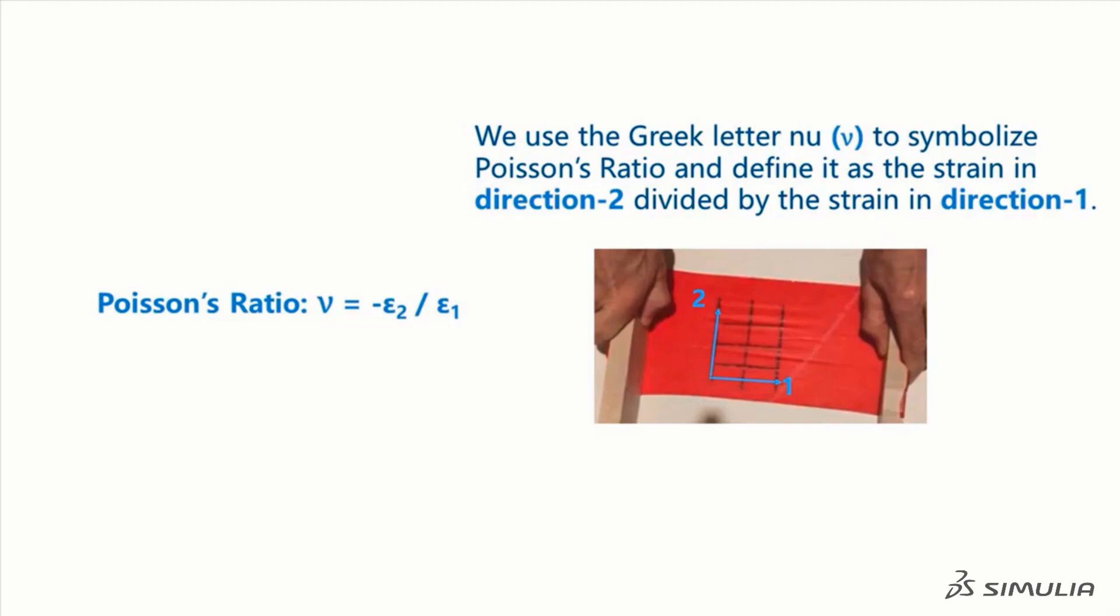We use the Greek letter nu to symbolize Poisson's ratio. And we define the Poisson's ratio as the strain in direction 2 divided by the strain in direction 1.